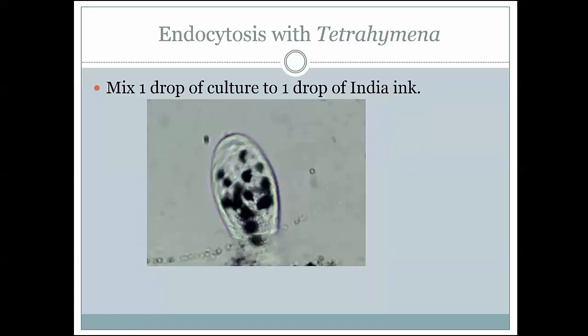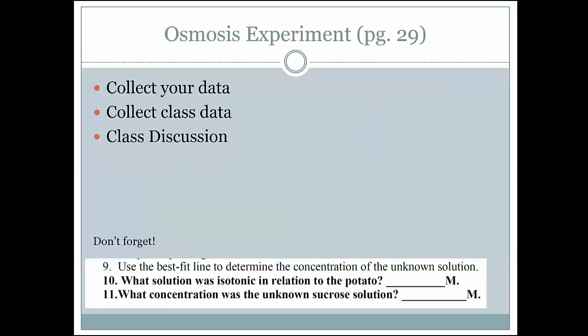We will also be looking at tetrahymena which is a ciliated single-celled organism and we'll try to get it to eat. And if you get it to eat, it'll eat bacteria that have been stained with ink. It'll bring those bacteria in through phagocytosis and because they're stained you'll see the accumulation of ink inside of their food vacuoles. And then what will happen next is a lysosome would fuse with those vacuoles and digest the contents inside. So that's active transport, or bulk transport anyway.